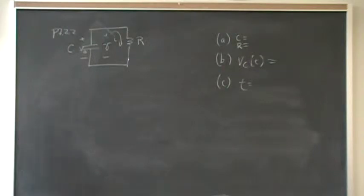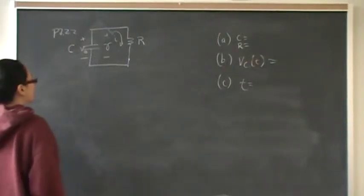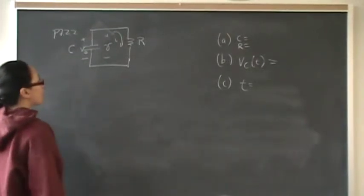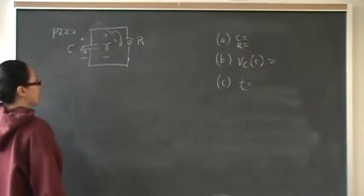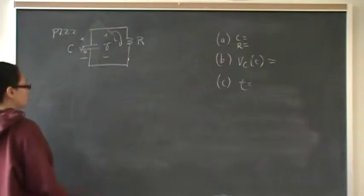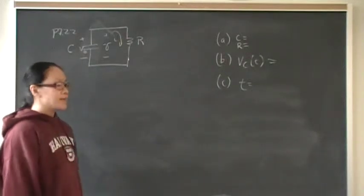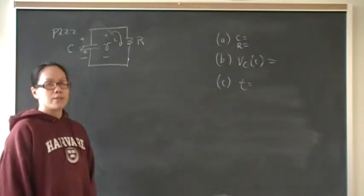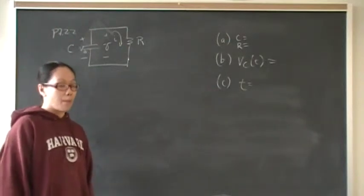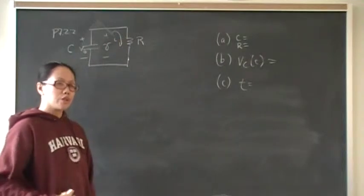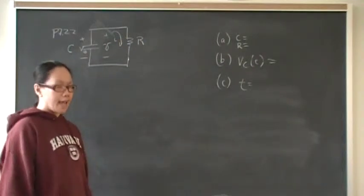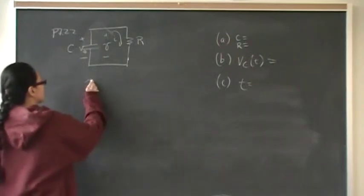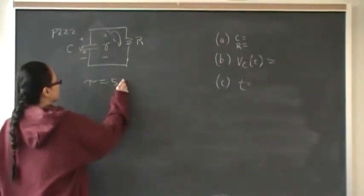Alright so the answer. For Part A we want to design a natural response of an RC circuit that has tau of 50 milliseconds. The great thing about tau is that by choosing values of resistance and capacitance we can design how slowly or how quickly we want things to decay. So we have control over that as engineers.